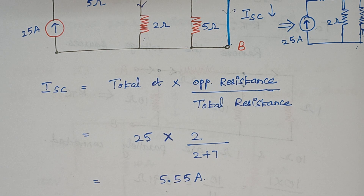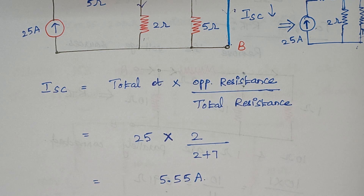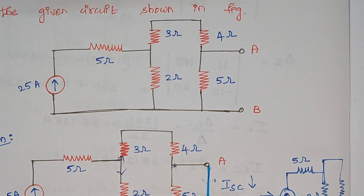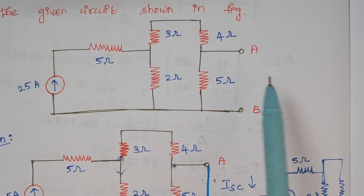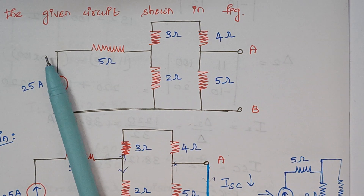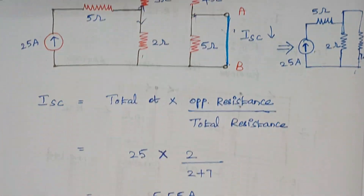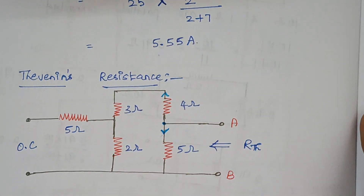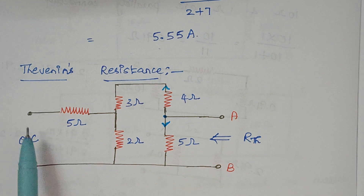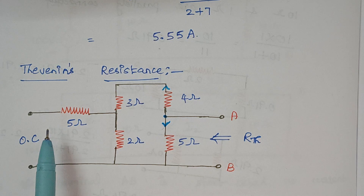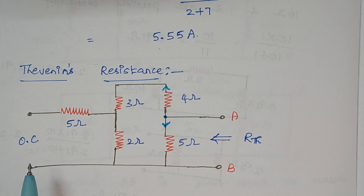Now the next step is to calculate Thevenin's resistance. To calculate Thevenin's resistance, we have to remove all the sources — whether it is a voltage source or a current source. Looking back at the given problem, we have to remove this current source and keep the rest of the circuit as such. When we do this, we get a diagram like this. Since it is a current source, whenever the current source is removed it becomes an open circuit.